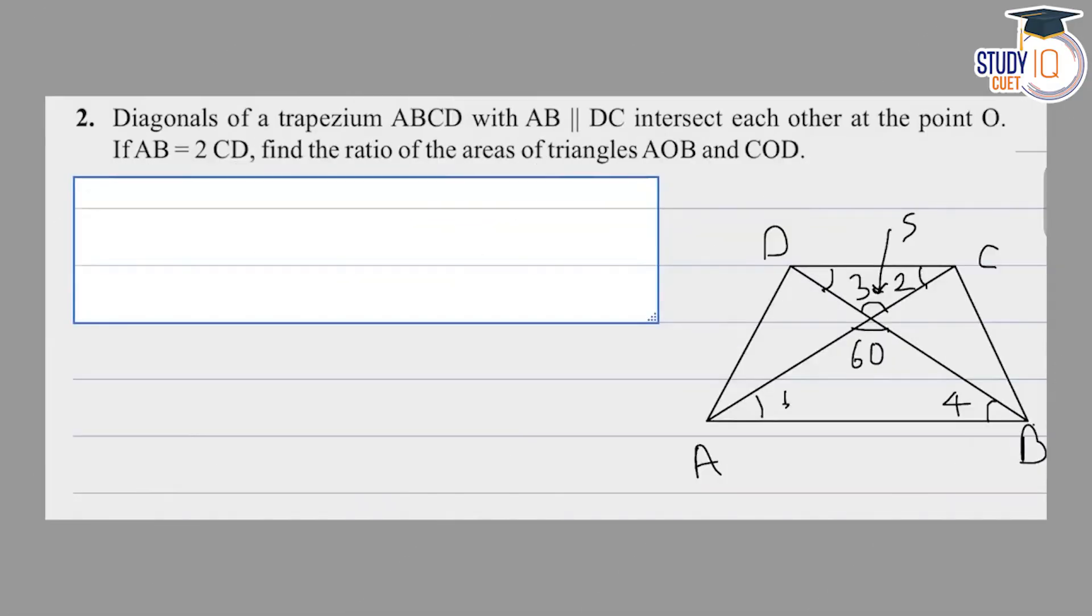Hello students, this is question number 2 from exercise 6.4 of NCERT class 10. Trapezium ABCD is provided with AB parallel to DC.